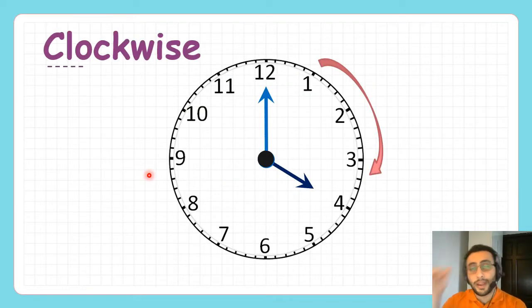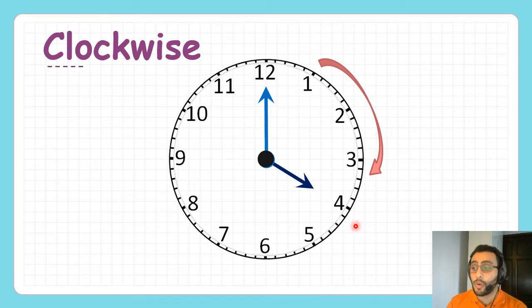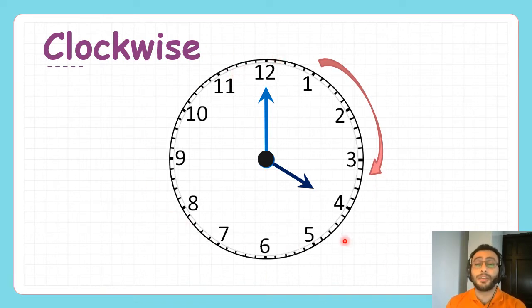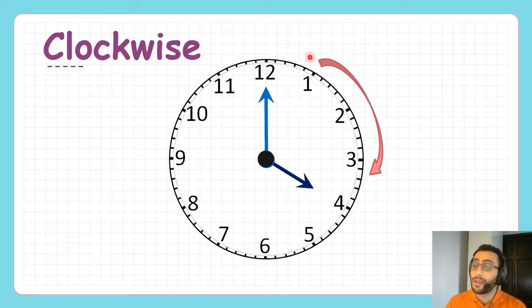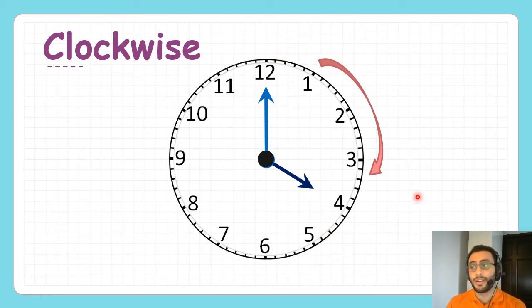The two hands on a clock always move clockwise. If they move the other way, that means your clock is broken. So they must always move this way — clockwise.